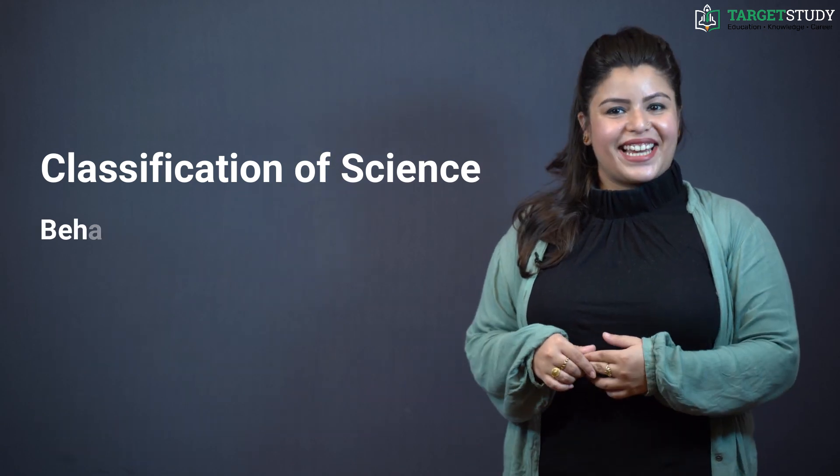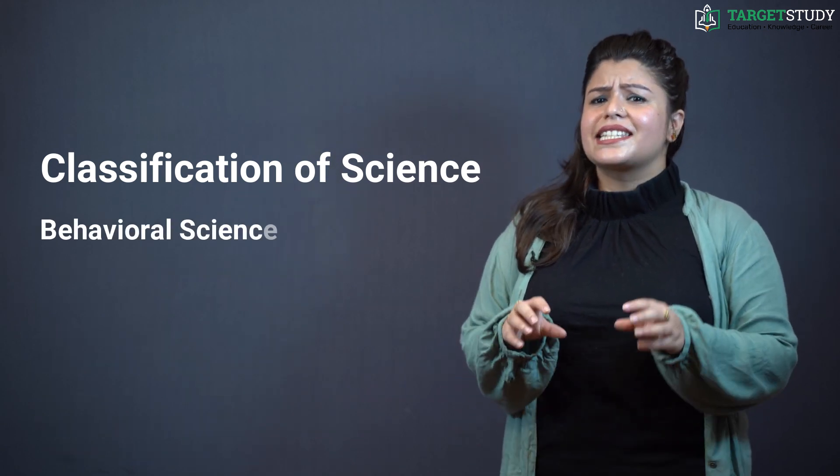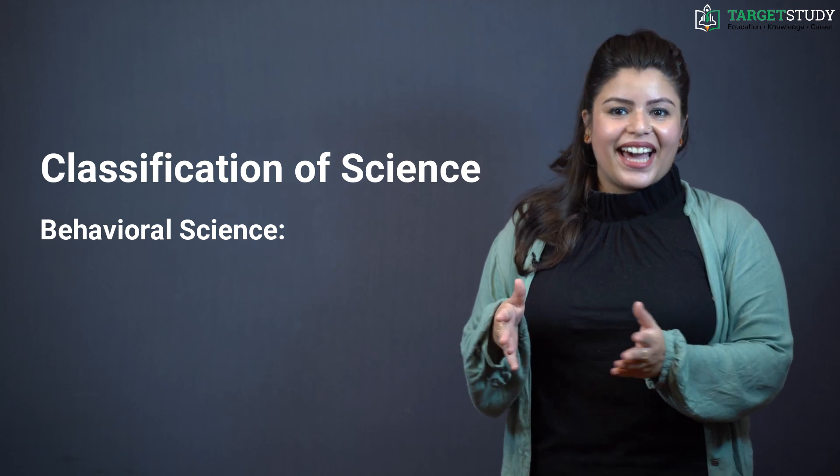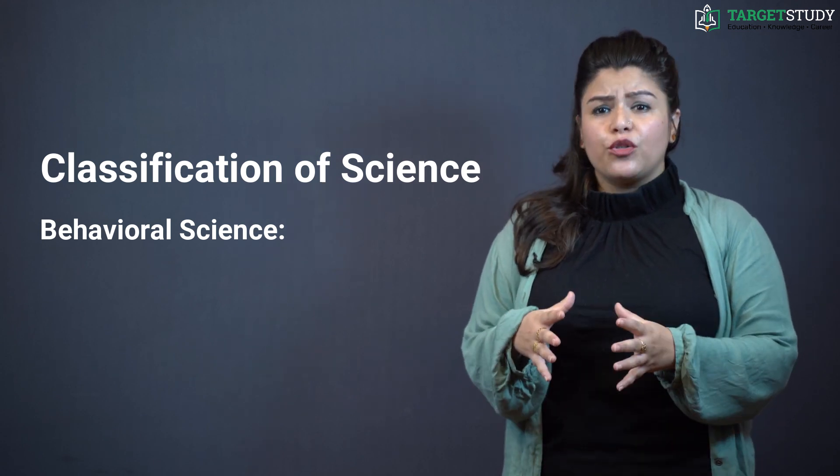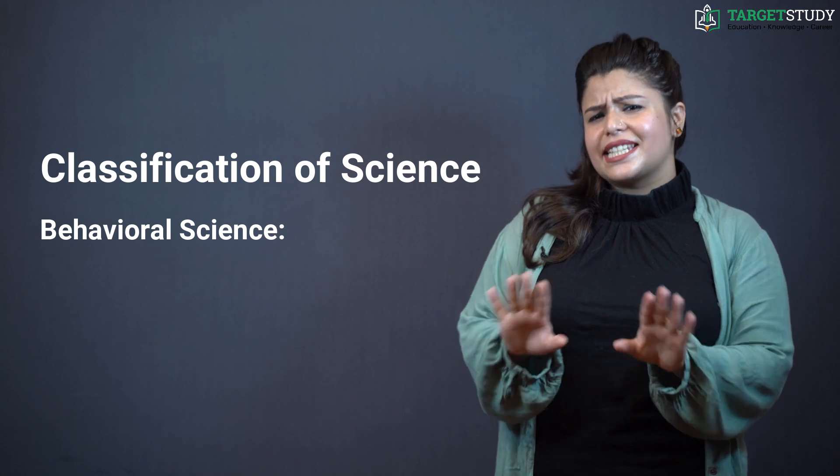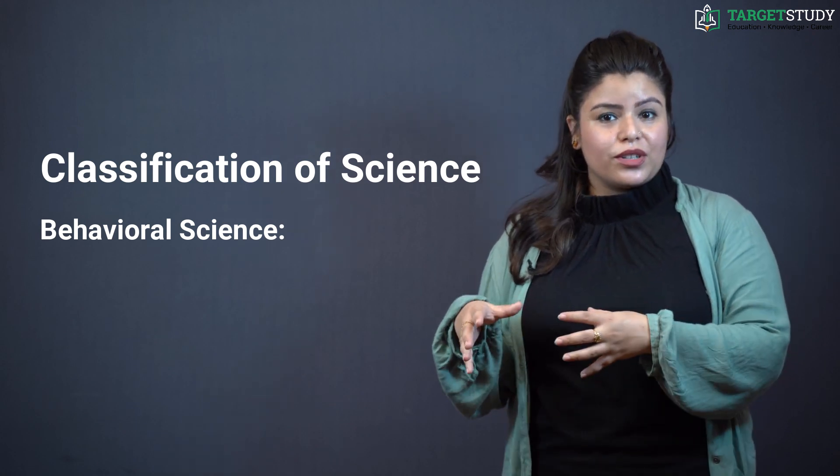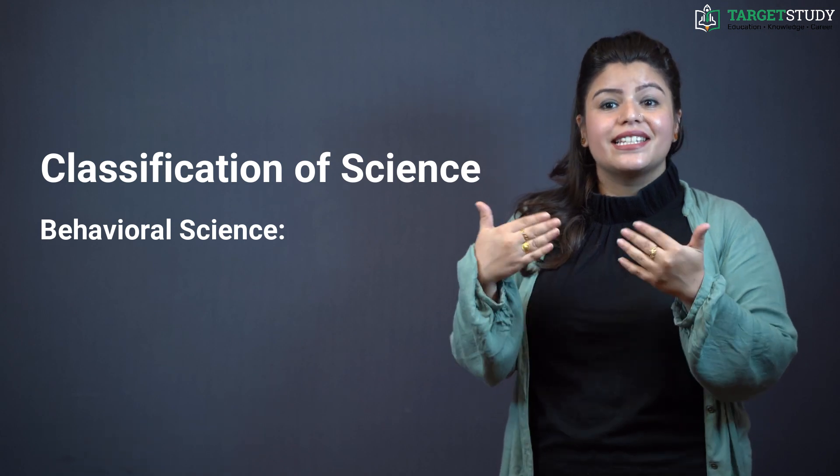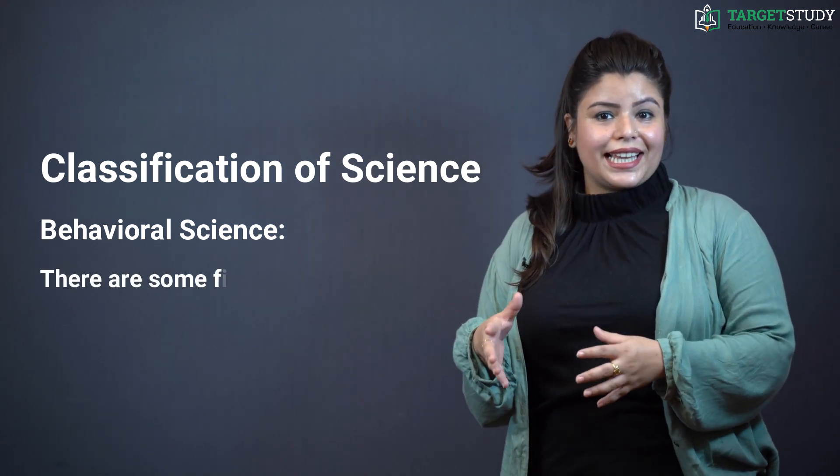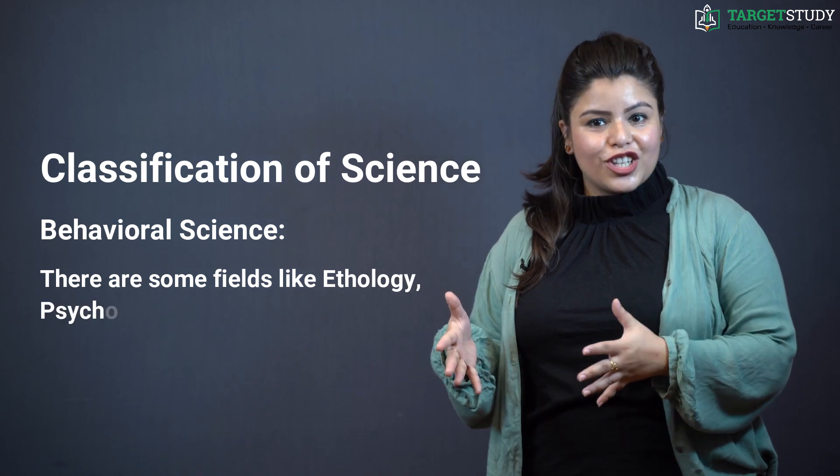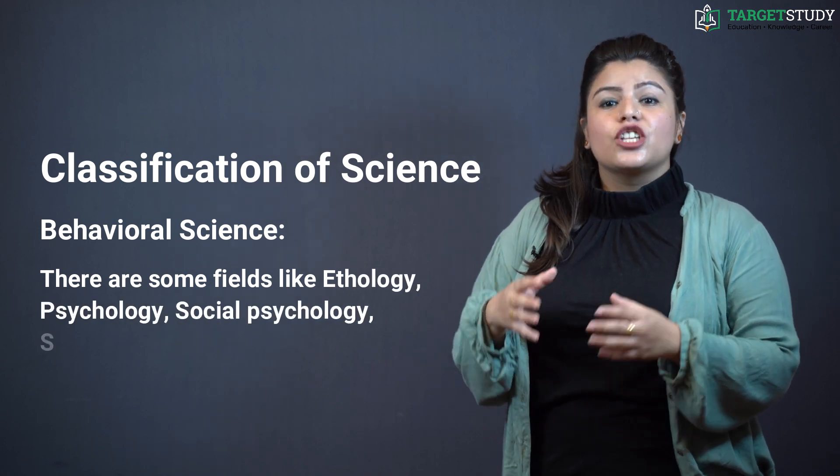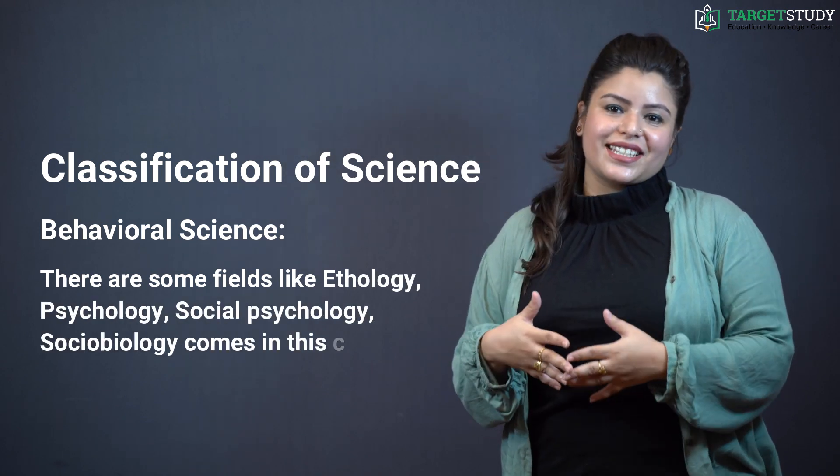Next in line is behavioral science. In short, it is the scientific study of human and animal behavior. Behavioral sciences generally disregard the existence of mind and concentrate on the patterns of response to external stimulus. There are some fields like ethnology, psychology, social psychology, sociobiology that come under this category.